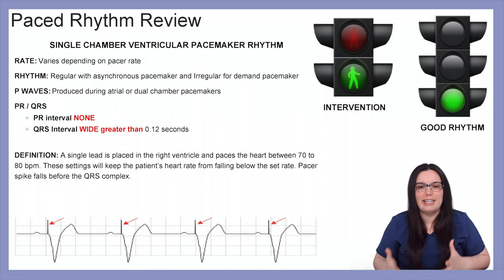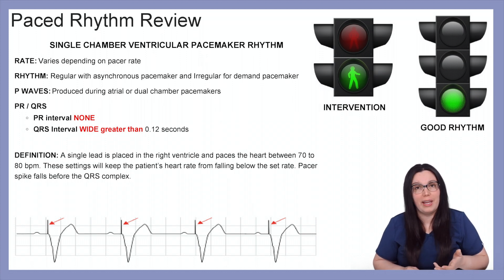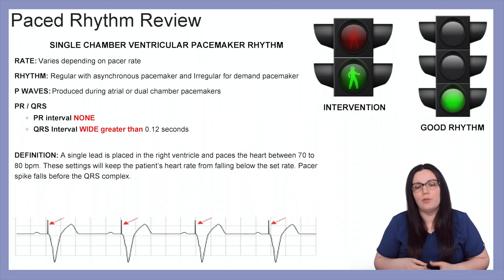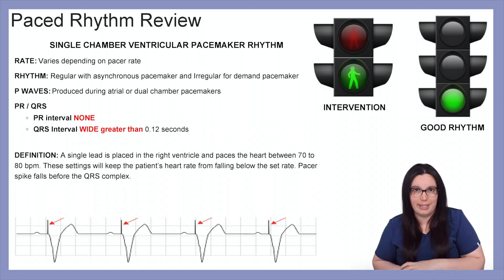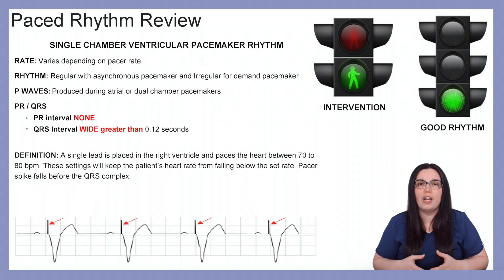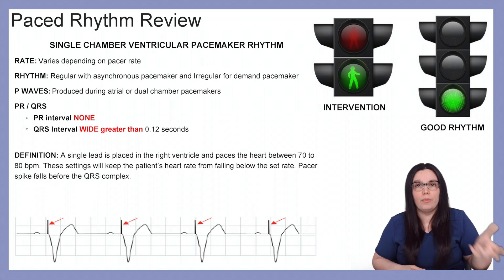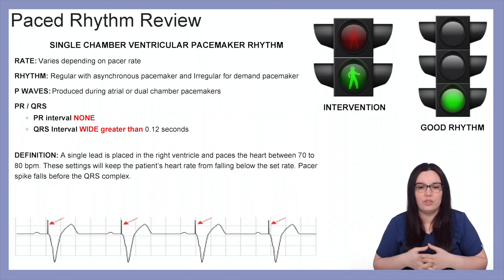Now we're going to take a look at single chamber ventricular pacemaker rhythms. The rate varies depending on what the pacemaker is set at. The rhythm can be regular with asynchronous pacemakers and irregular with demand pacemakers. P waves are produced either by the atria or during dual chamber pacemaker placements. If you do not have an inherent P wave rhythm produced from the atria, then you're not going to have a PR interval. The QRS is going to be wide, ugly, and disgusting — greater than 0.12 seconds.